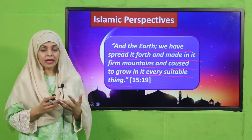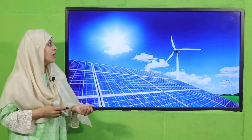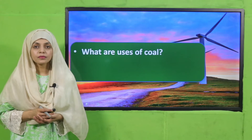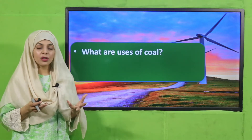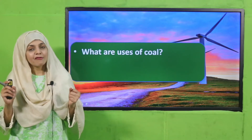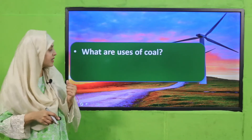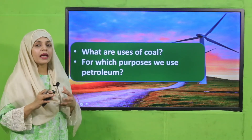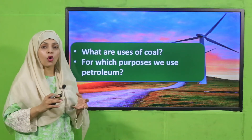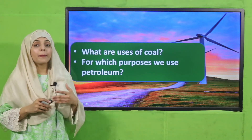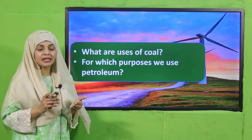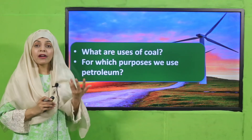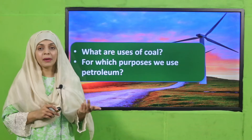Some pre-reading questions: what are the uses of coal? Ghar mein istamal karte hain, aksar barbecue karne ke liye istamal karte hain, tikke aur kebab banate hain. Very good. Coal ke ilawa bhi bahut sari uses hain. And for which purpose do we use petroleum? Petroleum masnuat jaise natural gas, petrol, diesel — ye gariyon mein, motorbikes mein, buses mein, jahazoh mein istamal hota hai. Factories mein aur industrial purposes ke liye bhi istamal kiya jata hai.